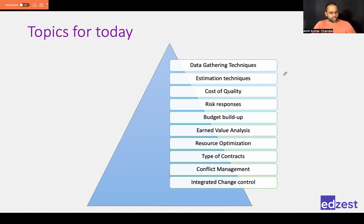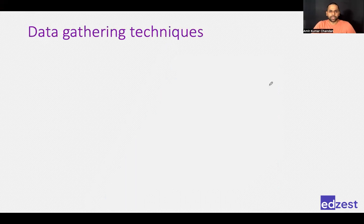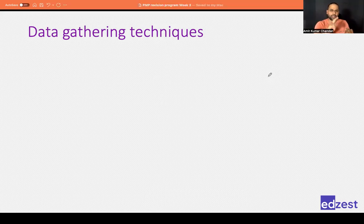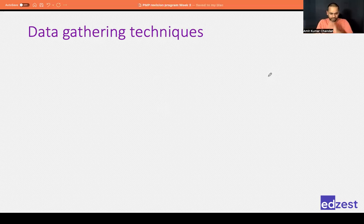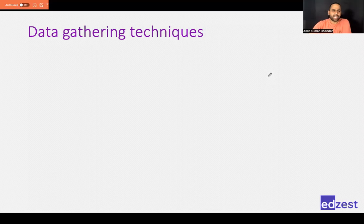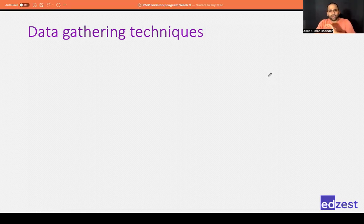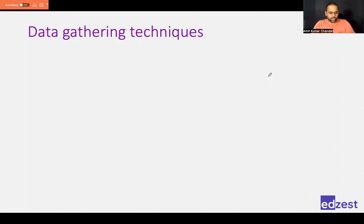Let us start with the first one: data gathering techniques. Throughout the project, you would be gathering a lot of data — data for requirements, scope, stakeholders, and many other things. We can use any one or many of these data gathering techniques in our project.